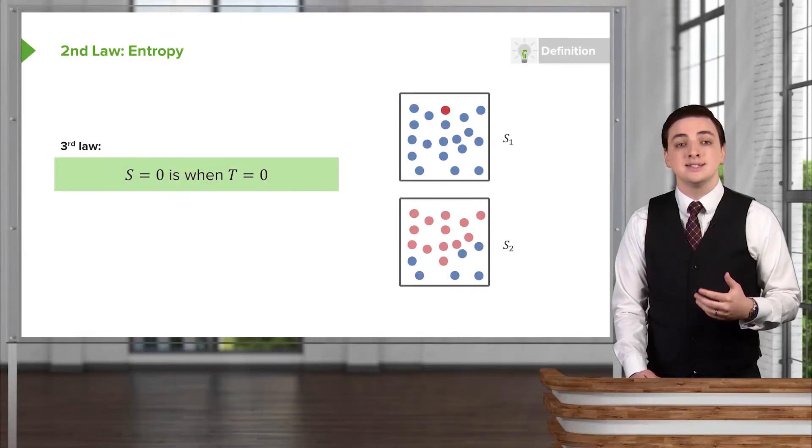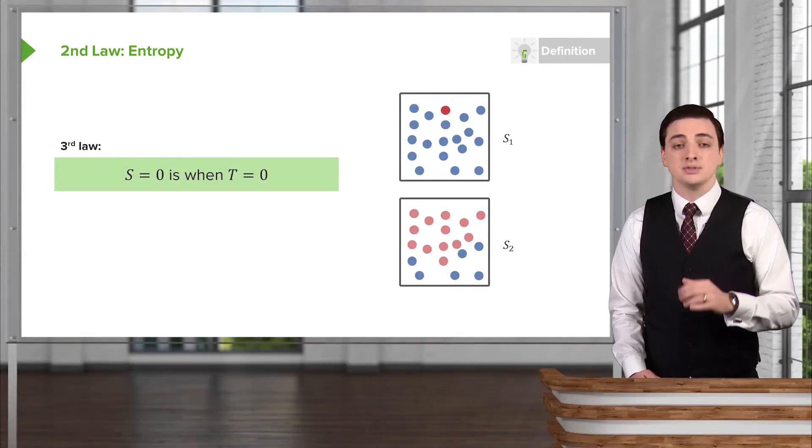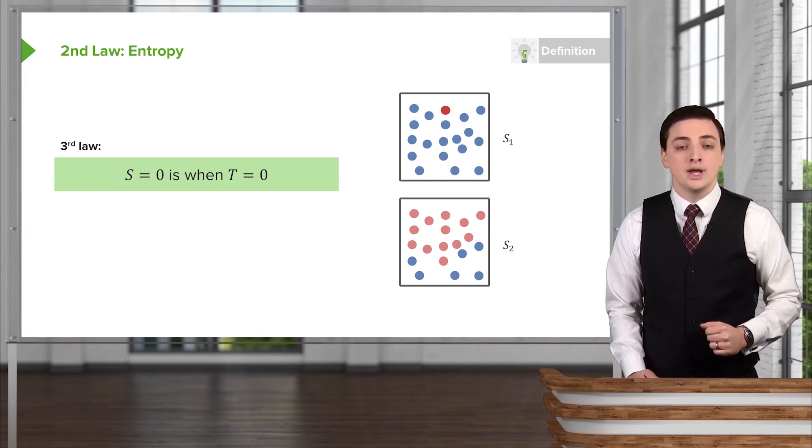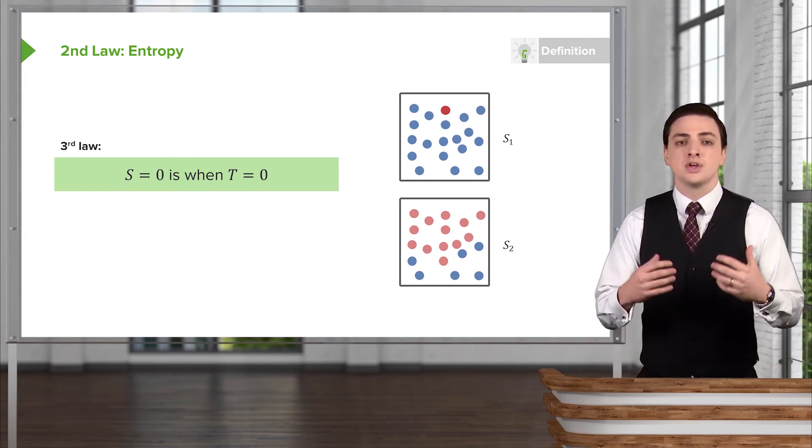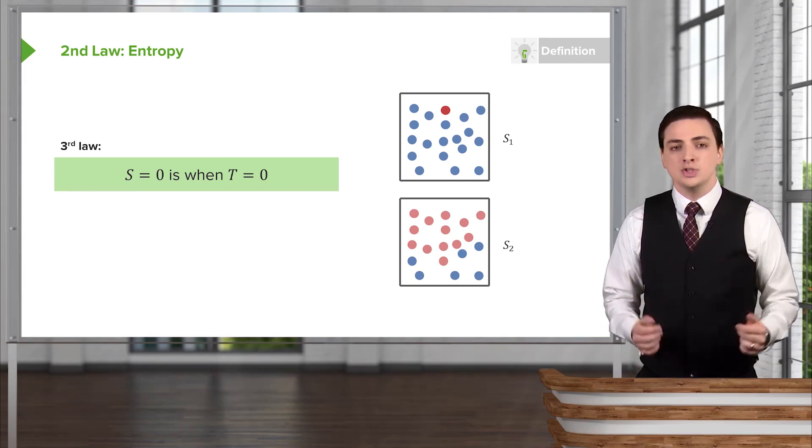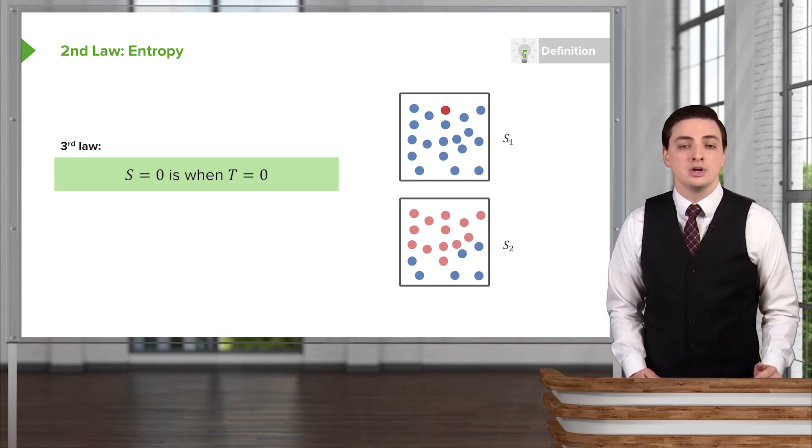So we would say that a system at zero kelvins in temperature, so absolute zero, would just have zero entropy, no disorder in that system, which again follows our intuition because if there's nothing moving, nothing can happen. There's no place for chaos to really occur in that system.